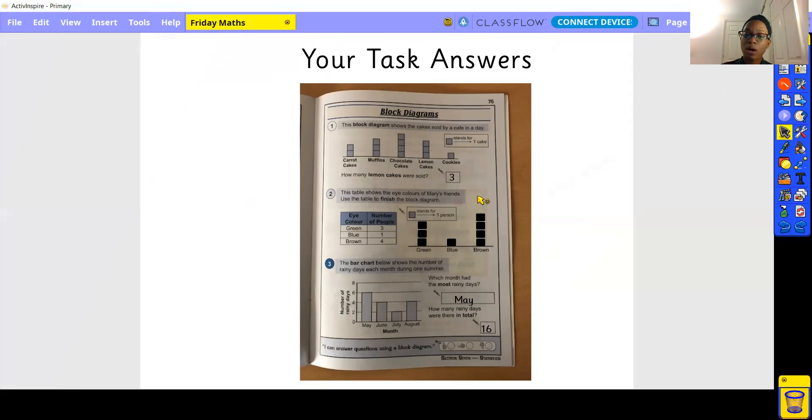You can see this is how I have done my block diagram. I've used black boxes and you can kind of see the little gap in between. But you can see green one, two, three. Blue has the one and the brown has one, two, three, four. That's how I've done mine.